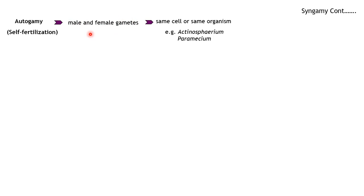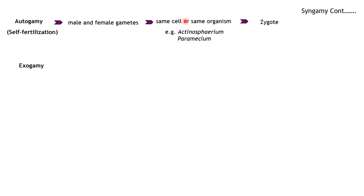Autogamy — 'auto' means self — is self-fertilization within a single individual organism. For example in paramecium, one individual organism has both male and female gametes within itself, so fertilization produces a zygote within the single parent. This is also known as self-fertilization. Examples include paramecium and actinospherium. These organisms do different types of reproduction because their ultimate purpose is to survive, and they have adapted different mechanisms for that.